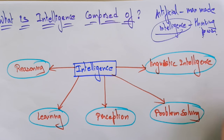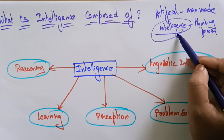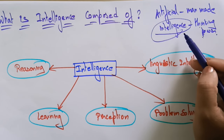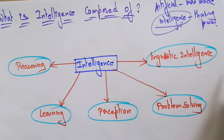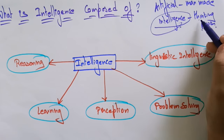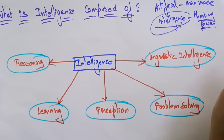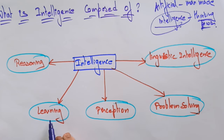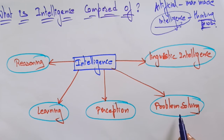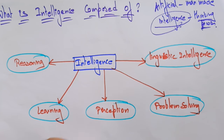So now, what is this intelligence composed of? Intelligence is composed of the thinking power, and the thinking power is composed of reasoning, learning, perception, problem solving, and linguistic intelligence.